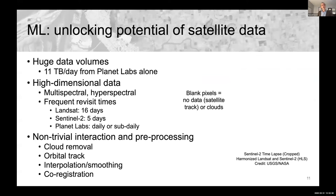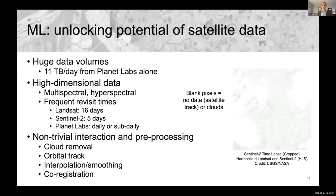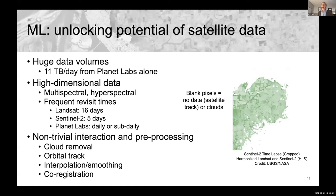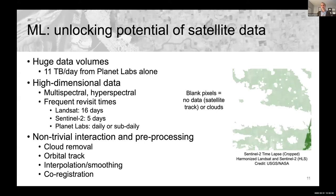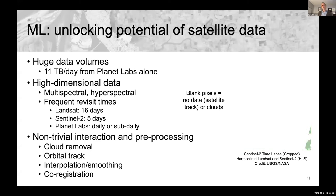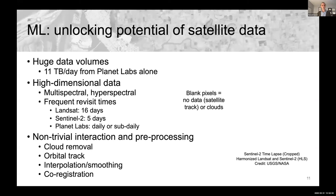This is challenging because it's non-trivial to interact with and pre-process remote sensing data before feeding it to machine learning models. Unlike commonly used datasets like ImageNet or normal 8-bit images, satellite data are much more complex, including the need to remove clouds and process images to be geo-referenced over the same location. In this GIF, I'm showing the actual unprocessed time series for one band from the Harmonized Landsat Sentinel-2 dataset, where blank pixels indicate missing data due to satellite track coverage or clouds.